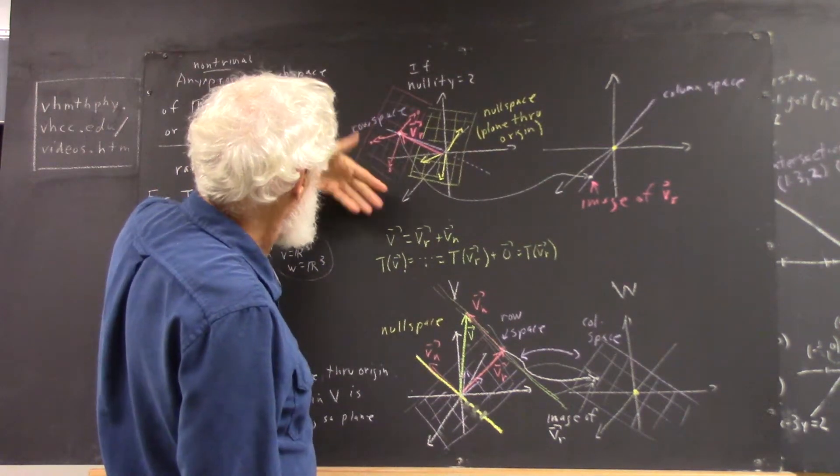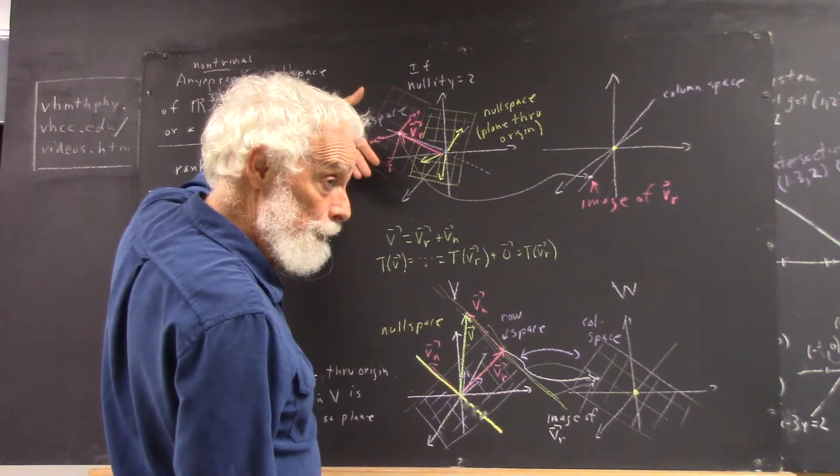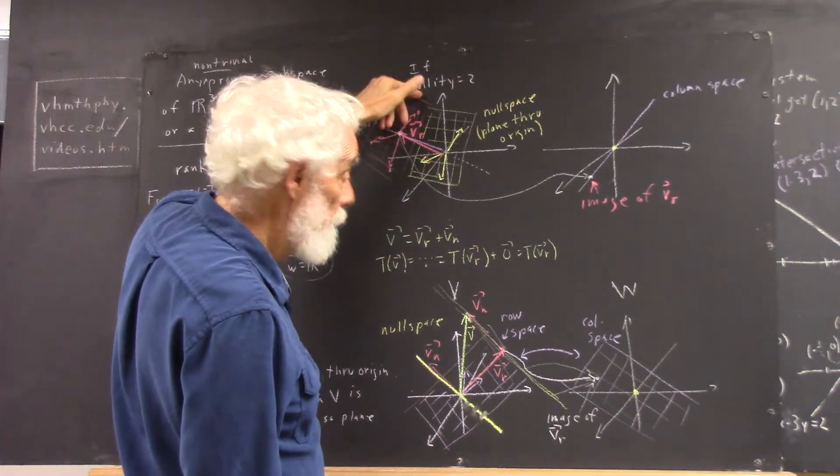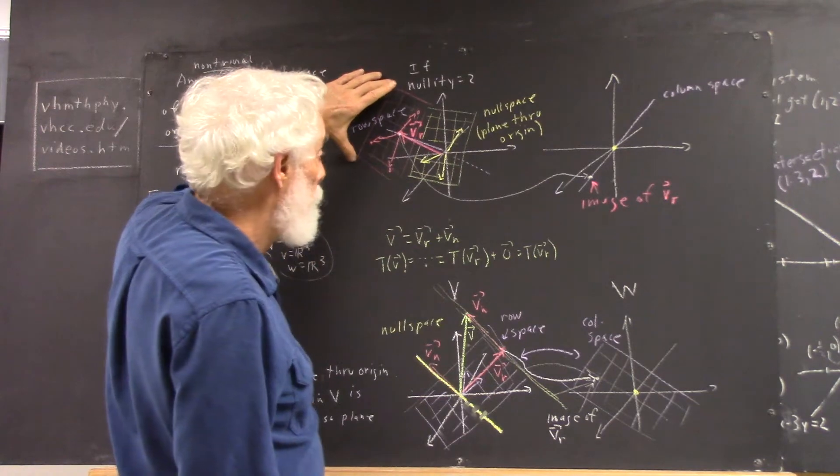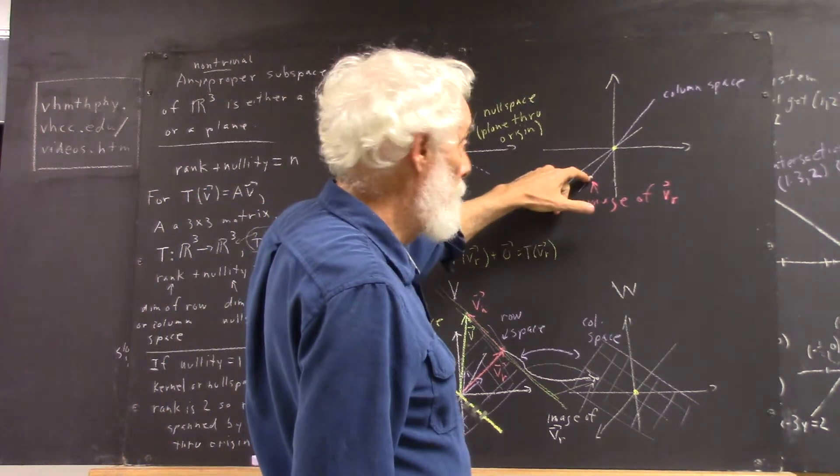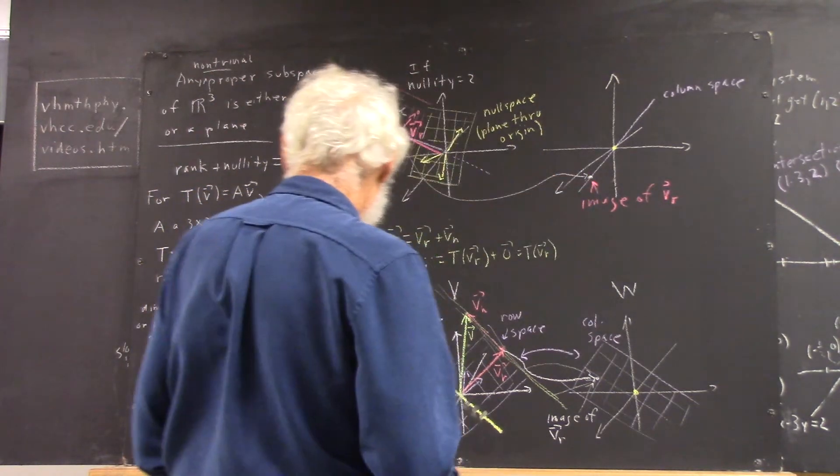So any point in this plane can be gotten to by a Vr plus a Vn. So that whole plane, this whole plane up here, all the points in this plane will map to this point in the column space.